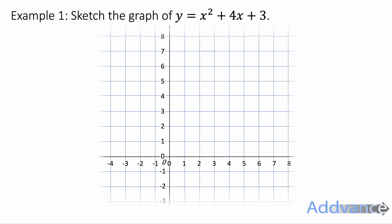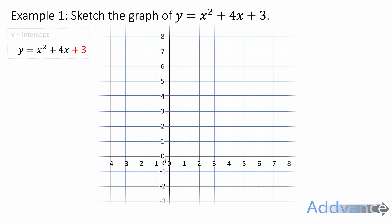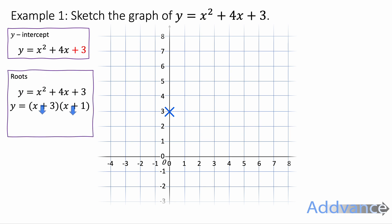In example one, we're going to sketch the graph of y equals x squared plus 4x plus 3. The number on the end is plus 3, so the y-intercept is plus 3 and it crosses at (0, 3). Next, we look at the roots. We factorise it as (x + 3)(x + 1), and that means the roots — where it equals zero — are x equals minus 3 and x equals minus 1.